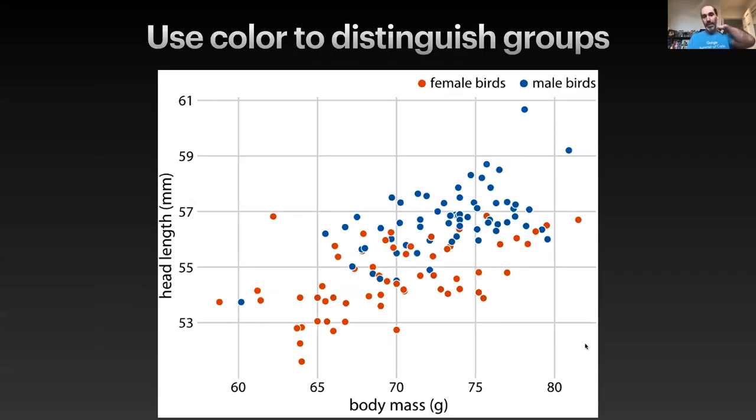Here's an example of that where now we have that overall data set split up into the male and female bird groups, and I'm using color to distinguish between those two groups.